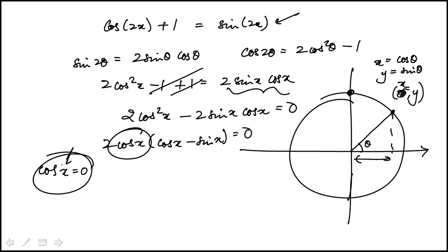So we're looking for when this whole thing is 0, which would be here at pi over 2, and then again when we come back to 3 pi over 2. So those are two values.